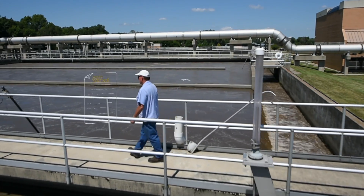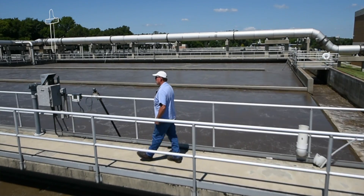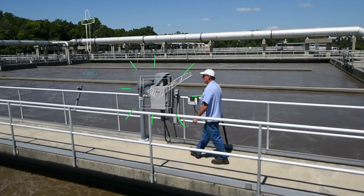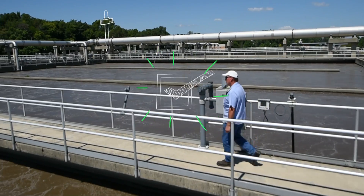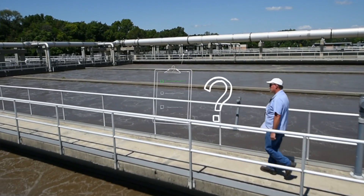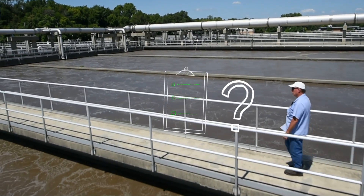Our new permit includes a compliance schedule for phosphorus. How do I make sure that we meet the new requirements without a huge increase in the operating budget? Removing phosphorus adds a new process and new expenses to water resource recovery facilities.